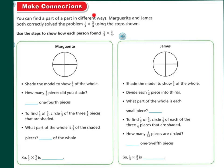Let's make some connections. You can find a part of a part in different ways. Margarita and James both correctly solved the problem one-third times three-fourths using the steps shown. Use the steps shown to show how each person found one-third of three-quarters. Here's how Margarita did it. She shaded the model to show three-quarters of a whole. So, let's shade the model. There's three-quarters of a whole because it's broken up into four parts, which is what the bottom is, and the top is what we shaded, and that's the three parts.